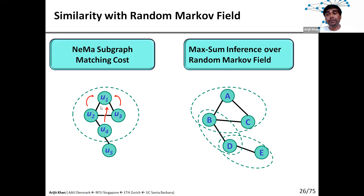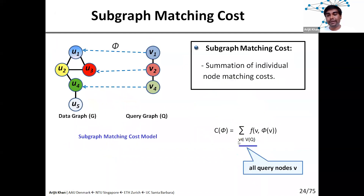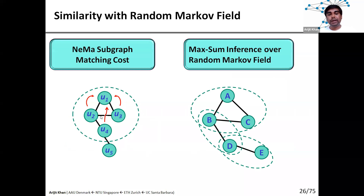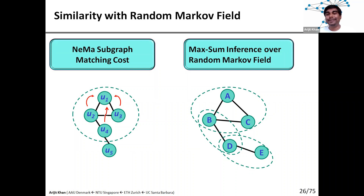The similarity between our problem and inferencing over random Markov fields is as follows: in our problem we want to find the best possible match with respect to the query graph by minimizing cost, which is the global objective function. This cost of matching can be decomposed into the cost of matching individual query nodes, and the cost of matching individual nodes depends on that node's match and its neighbors up to a certain number of hops — so the global objective decomposes into local factors. Similarly, in random Markov field inference, you maximize the joint probability distribution that decomposes into local factors over subsets of variables.